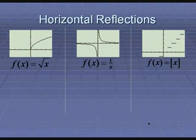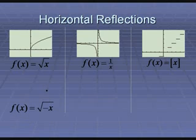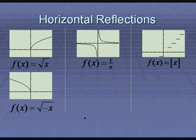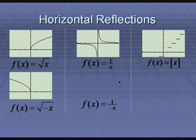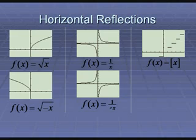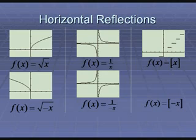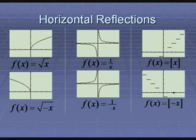Horizontal reflections flip the graph across the y-axis — left and right — by putting the negative inside with the x. For 1/x, attaching the negative to x gives the same result as flipping vertically, since negative 1/x equals 1 over negative x. Technically, since the negative is on the x, we say it's flipped horizontally. For the floor function, the negative inside with x flips it across the y-axis horizontally.